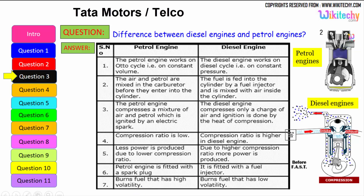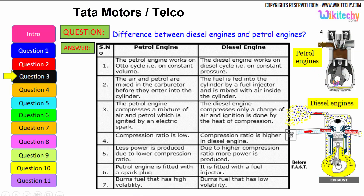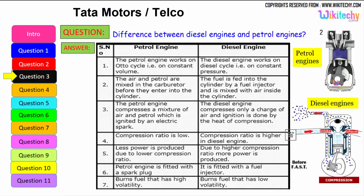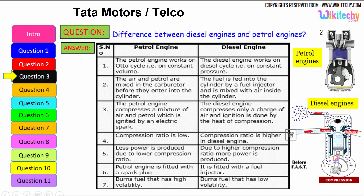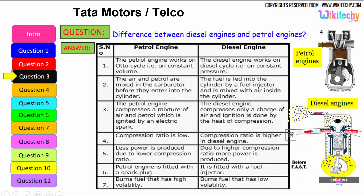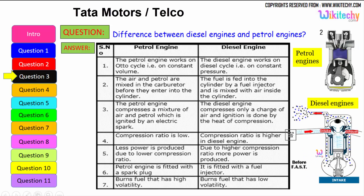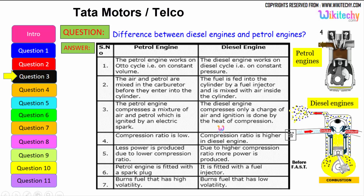The petrol engine burns fuel of high volatility — petrol is highly volatile — whereas the diesel engine can burn low volatility liquid as well, since diesel is a low volatile liquid. These are some of the key differences between the petrol engine and diesel engine.